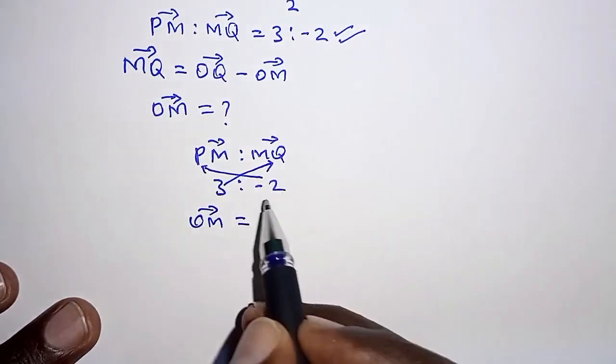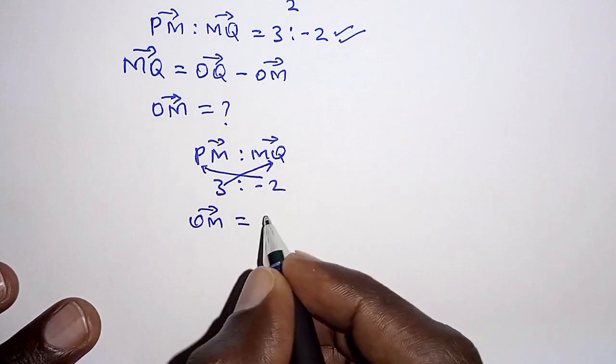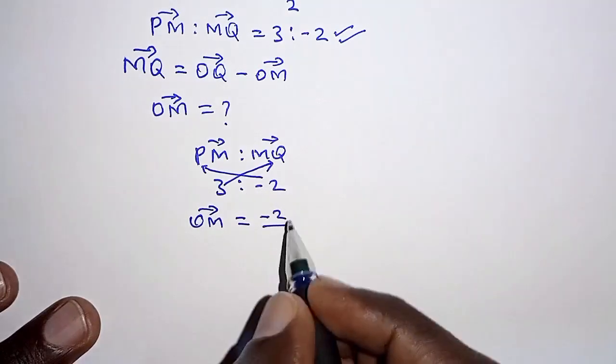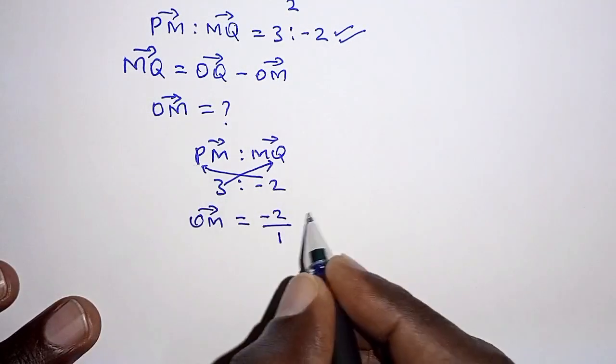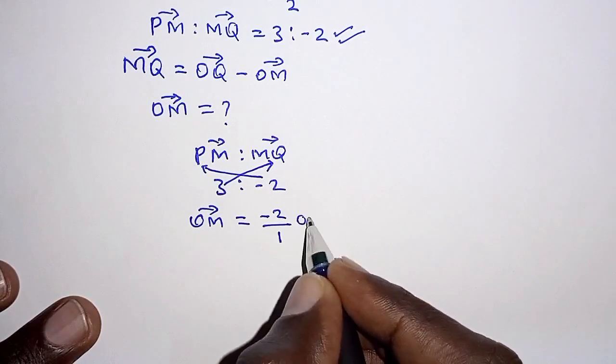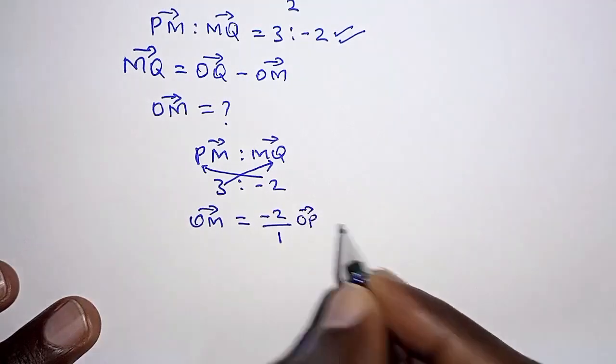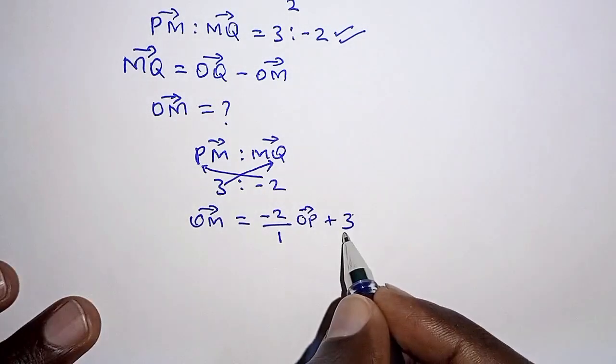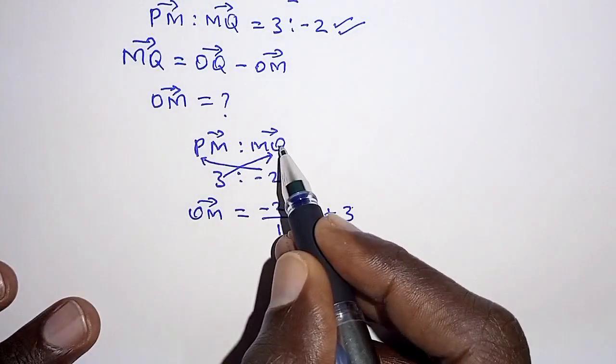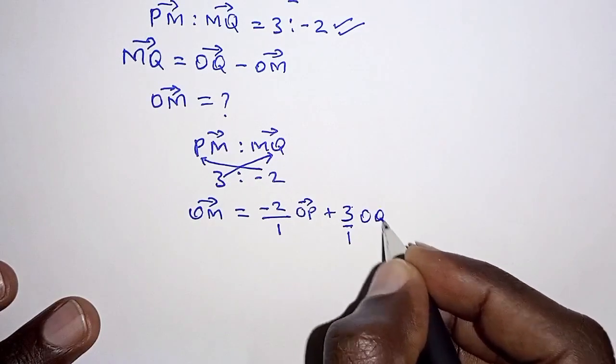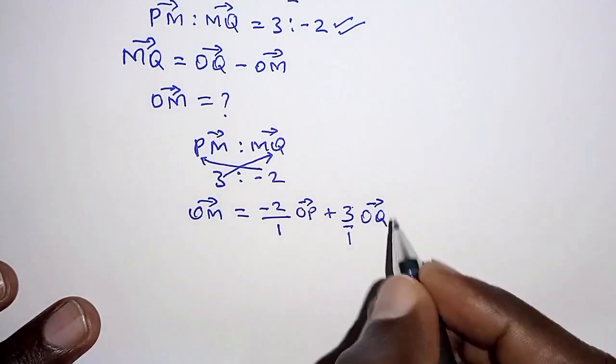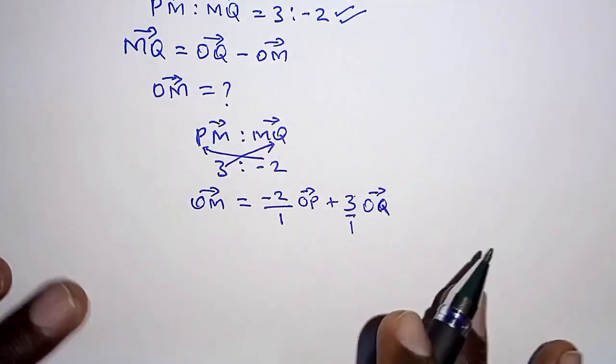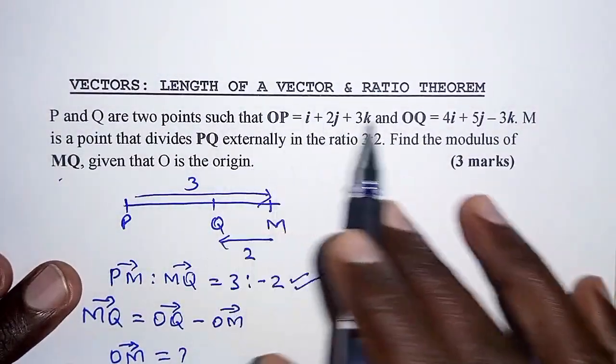OM should be given as negative 2 over the total. The total here is 3 plus negative 2 which is 1, times position vector of P, so that is OP, plus 3 over the total which is 1, times position vector of Q, that is OQ. Now OP and OQ we are already provided with here.